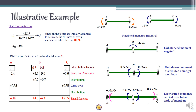The next step is to find the distribution factors. Joints A and C are fixed ends, so D_AB and D_CB are zero. At joint B, two members BA and BC meet, each with equal length, equal EI, and fixed far ends. The stiffness of both members is 4EI/5. The distribution factor D_BA equals 4EI/5 divided by (4EI/5 + 4EI/5), which gives 0.5. Similarly, D_BC equals 0.5.